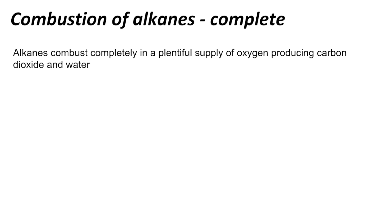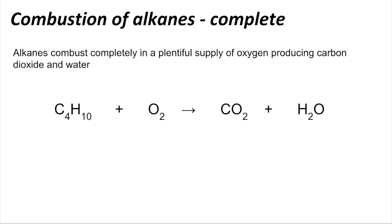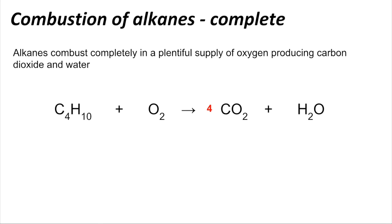Moving on to combustion of alkanes — starting with complete combustion. Alkanes combust completely in a plentiful supply of oxygen, producing carbon dioxide and water. Here's the unbalanced equation for butane. To balance it: start with the carbons — four carbons gives four CO2s. Ten hydrogens give five H2Os. Then work out the oxygens: four times two is eight, plus five is thirteen, so we need 13/2 O2, which gives us the thirteen oxygens we need.